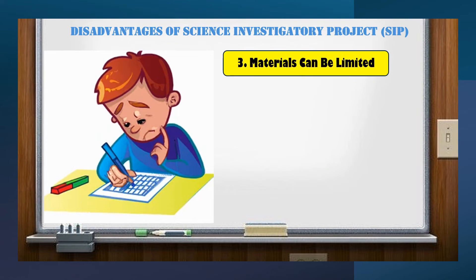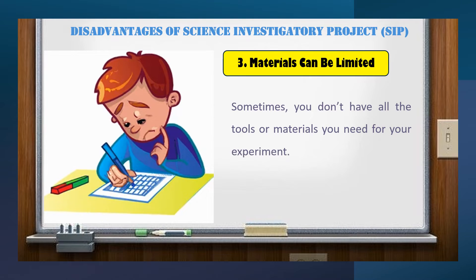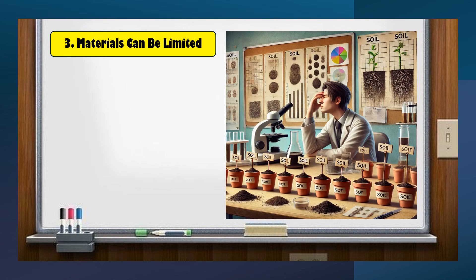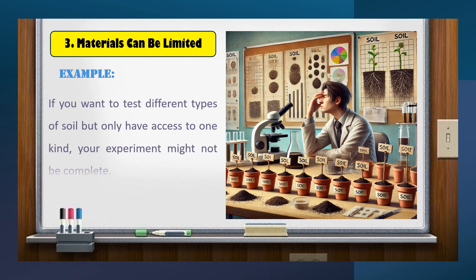Third, materials can be limited. Sometimes you don't have all the tools or materials you need for your experiment. For example, if you want to test different types of soil but only have access to one kind, your experiment might not be complete.